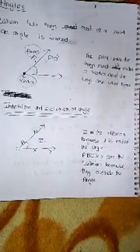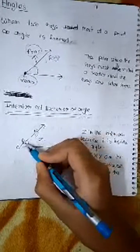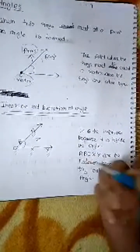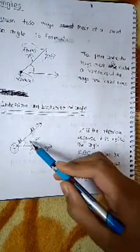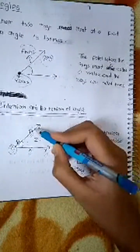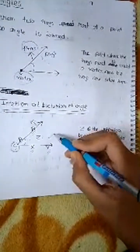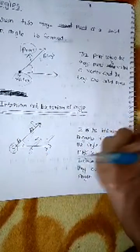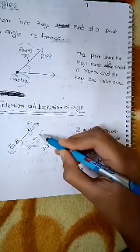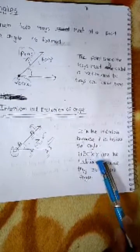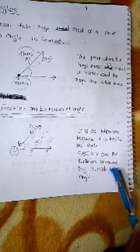Next we will be learning about the exterior and interior of an angle. Points P, F, A, B, X, Y — C is our vertex. P, F, A, B, X, and Y will be the exterior because they are at the outer side of the angle. Z will be the interior because it is inside the angle. Z is the interior, and A, B, C, X, Y are the exterior because they are outside the angle.